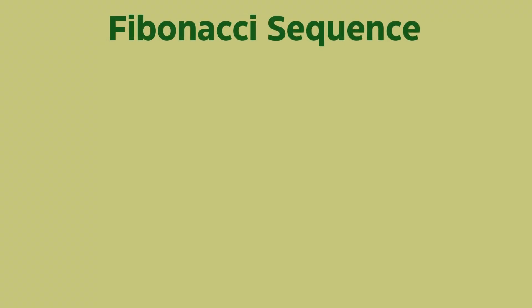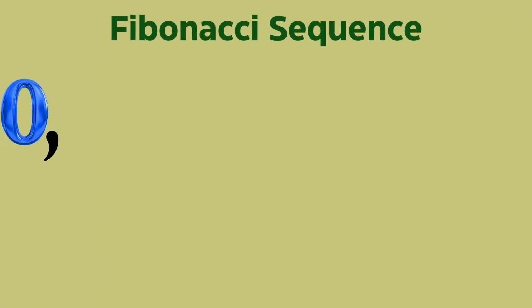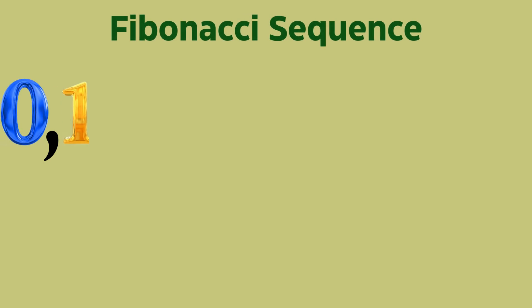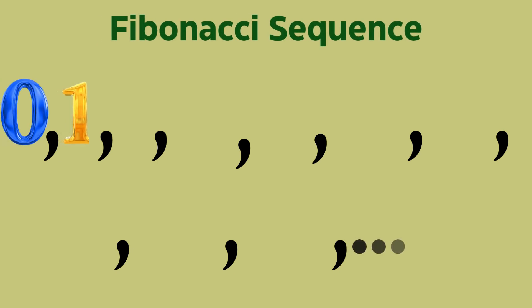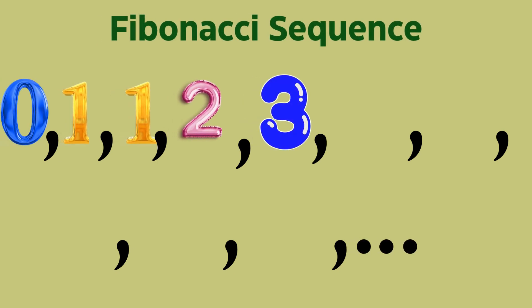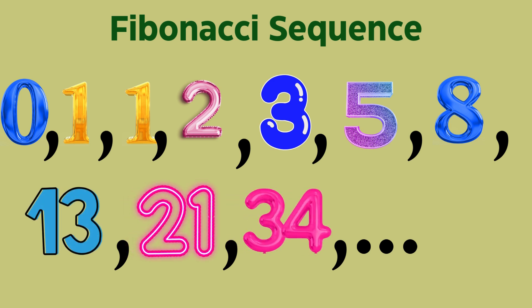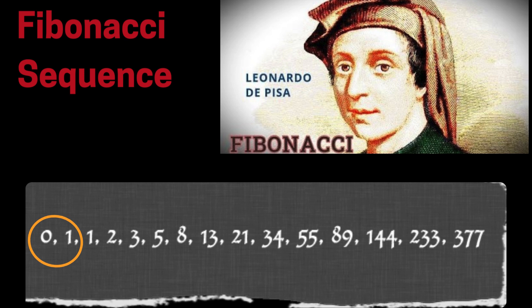The Fibonacci sequence begins simply with 0 and 1. After these two starting numbers, each new number in the sequence is the sum of the two previous ones. So the sequence goes: 0, 1, 1, 2, 3, 5, 8, 13, 21, 34, and onward into infinity.